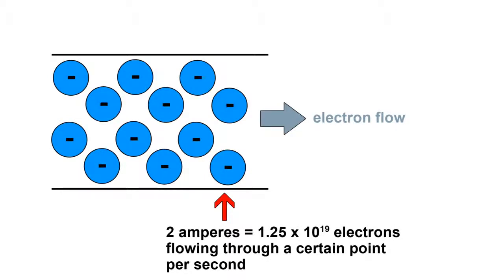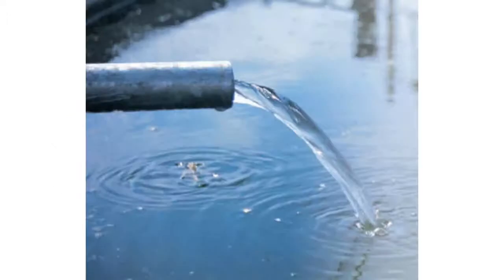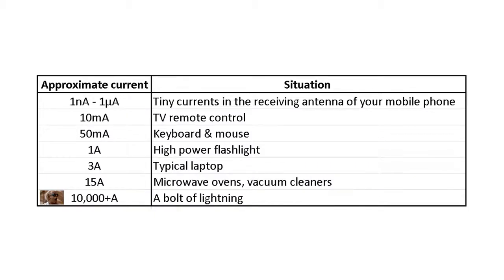And obviously two amps means that twice the electrons are flowing. And if you want, you can use the analogy of the amount of water flowing through a pipe. Just so you have a frame of reference, here are a few examples of different currents you might encounter in your day-to-day life.